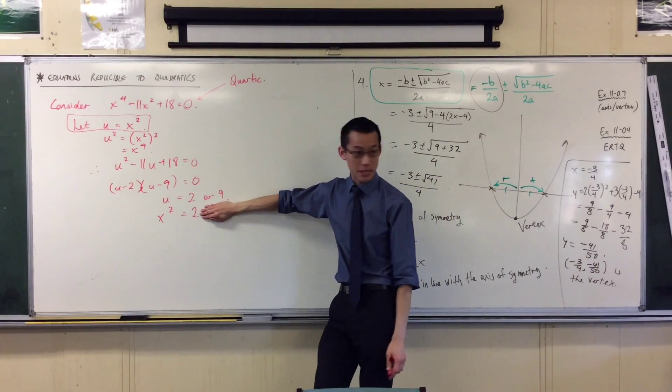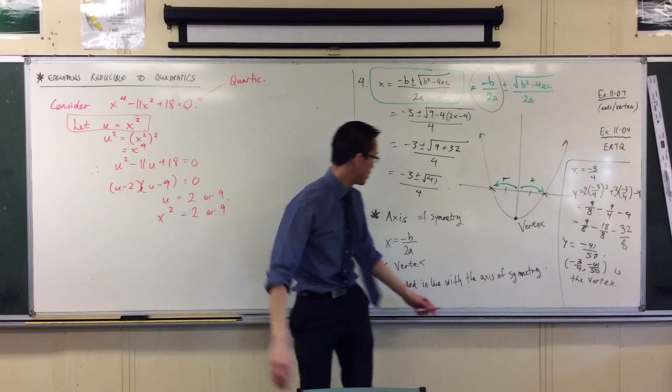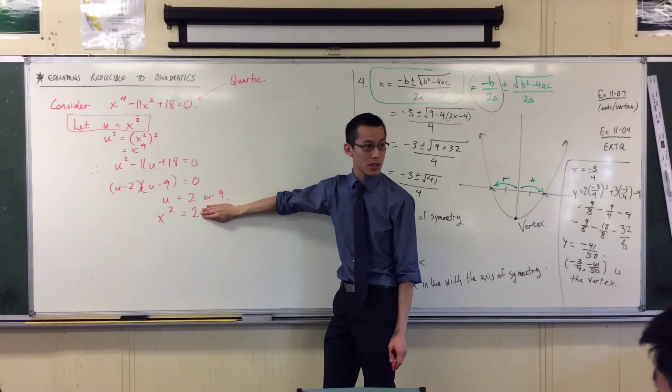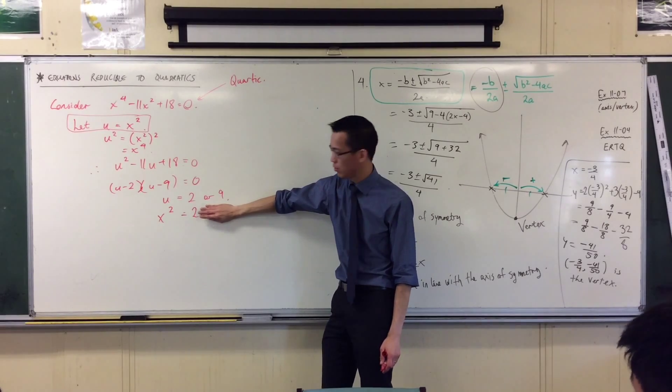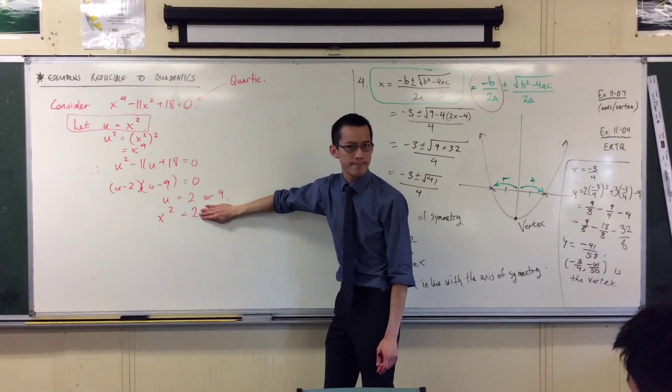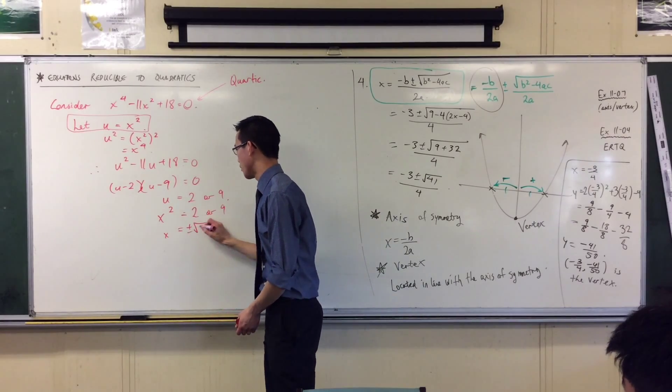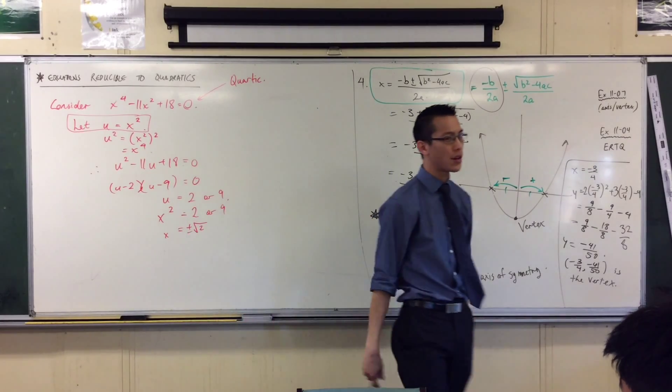Over here you know there's going to be two solutions to that. Two solutions. What are the two solutions just to that part of the equation? Plus or minus the square root of two. You square either of those, which is what this is supposed to do, you'll get two.